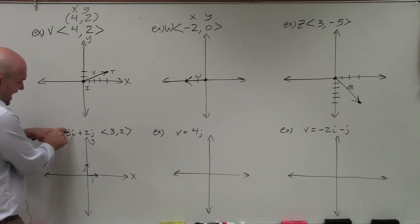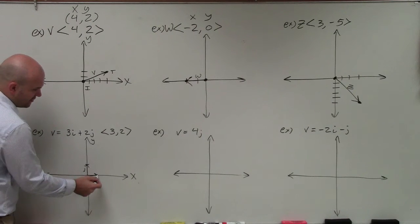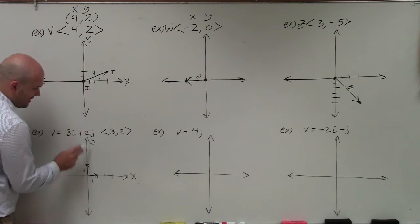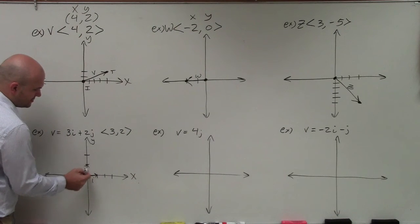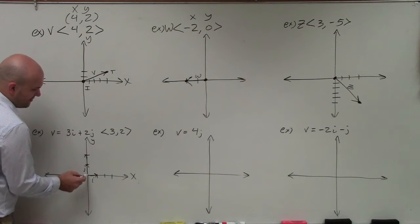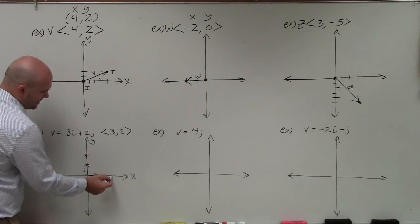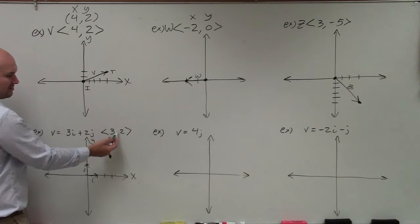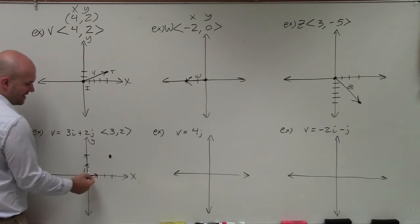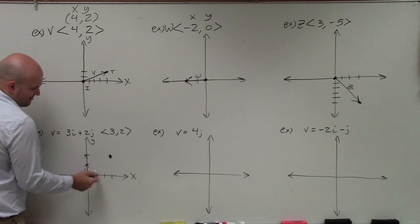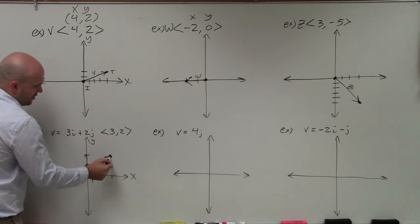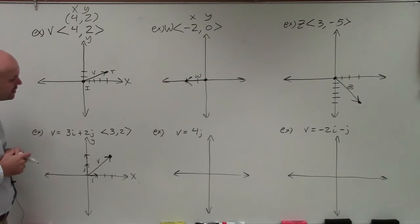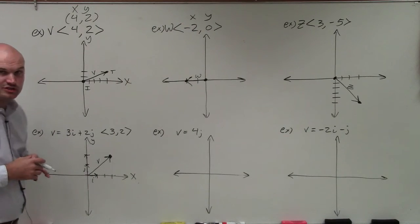So if I have three i's, that means I'm going over to the right 1, 2, 3. And if I have two j's, then I'm going up 2. These are going to mean if I go over 3 and then up 2, it's just like plotting this point on an x and y-axis over 3 up 2. It's basically the same way, just a different way to represent. But there you go. That is your vector, 3i plus 2j.